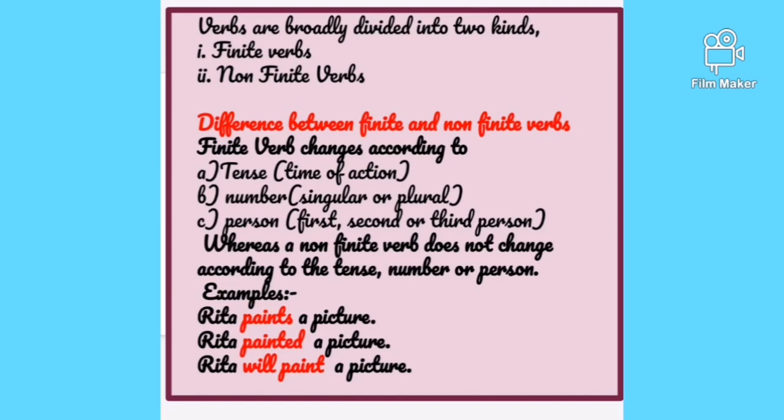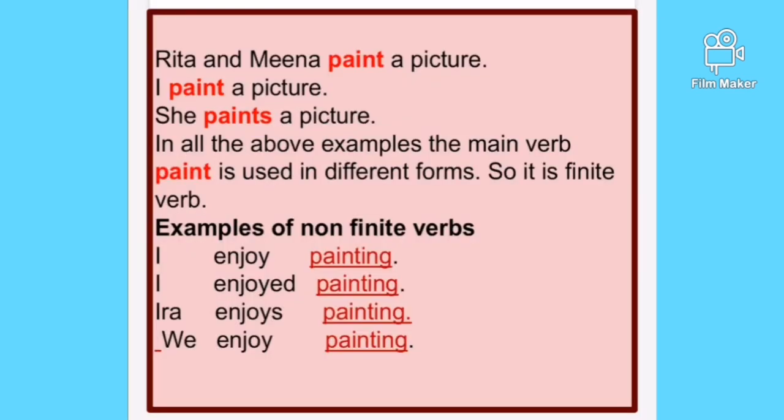'Rita paints a picture' is for one person — singular — and uses 'paints.' If we make it plural, 'Rita and Mina paint a picture,' the verb form changes to 'paint.' So we see the verb changes according to the number of people doing the action, whether singular or plural.